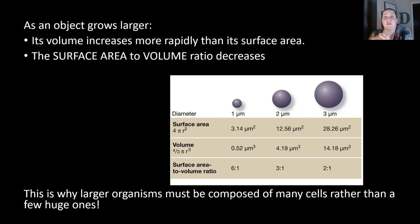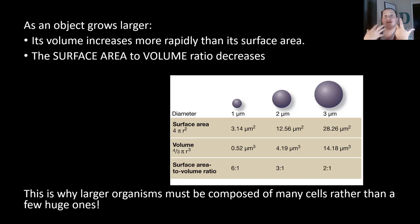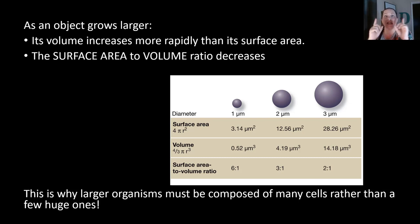This is why larger organisms must be composed of many cells. This is why we are a multicellular organism — we're composed of many cells that work together instead of one large cell.